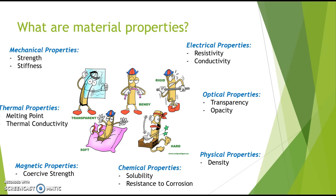So what are material properties? Within this first slide you can see exactly what we're talking about. We're looking at the mechanical properties dealing with strength and stiffness, thermal properties looking at melting point and thermal conductivity, optical properties, electrical properties, physical properties looking at density, and also magnetic properties and chemical properties. All of these are things that engineers need to take into consideration when determining exactly what type of material they want to use for their various projects.